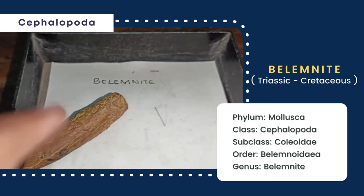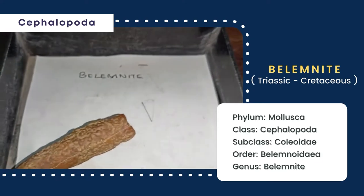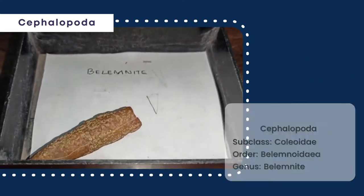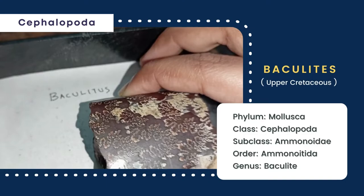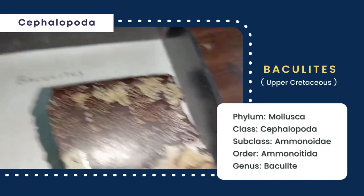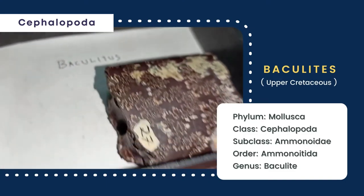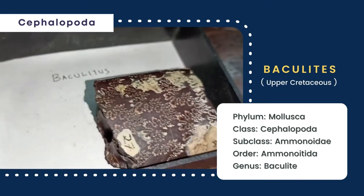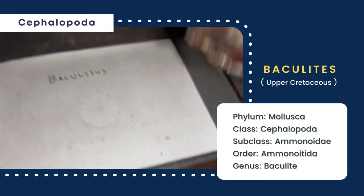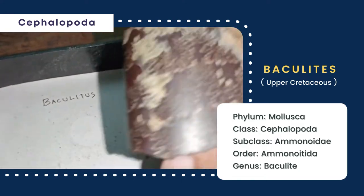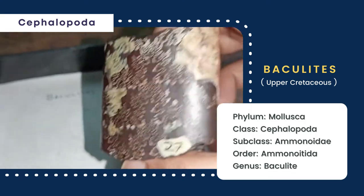The guard consists of calcite prisms oriented at right angles to the surface. Next, this specimen is a fragmental part of the baculite shell, which is straight and elliptical in section. The surface of the shell is smooth and ornamented with ammonite-type sutures.